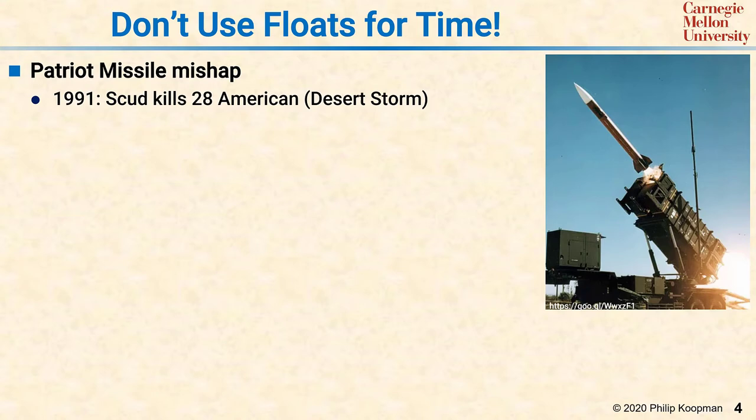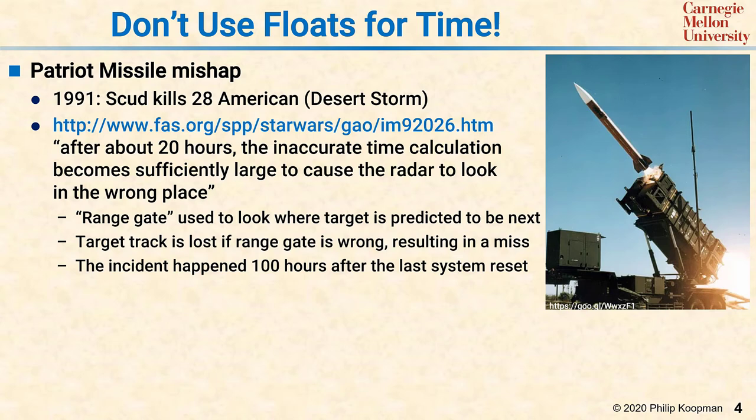Back in 1991, during Operation Desert Storm, there were SCUD missiles being launched, and the Patriot missile system was deployed to intercept and shoot down those incoming ballistic SCUD missiles. According to the investigation report, after about 20 hours of continuous running, the time calculation became so inaccurate due to round-off error that the radar looked in the wrong place for the incoming missile. That means when the Patriot missile interceptor was launched, it was guided to the wrong place and missed hitting the incoming SCUD.